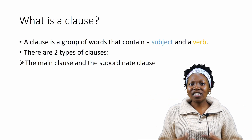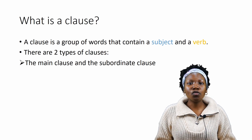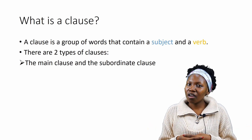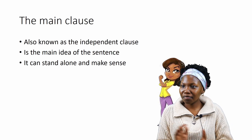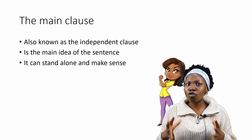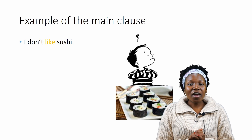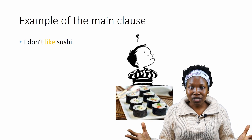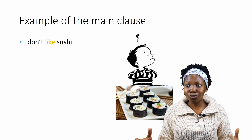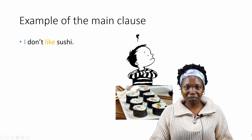So what is a clause? A clause is a group of words that contain a subject and a verb. There are two types of clauses: you have the main clause and the subordinate clause. The main clause is also known as the independent clause. It can stand on its own and it can make complete sense — it is the main idea of the sentence. For example, 'I don't like sushi.' This clause can stand on its own and make complete sense. The 'I' is the subject and 'like' is the verb.